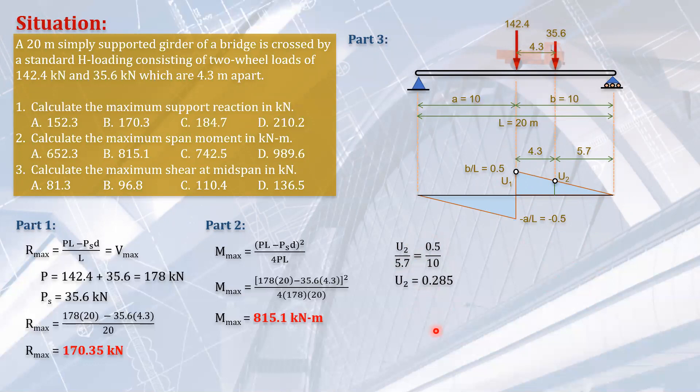So finally, the maximum shear at the mid-span is 142.4 times U1 plus 35.6 times U2. So that's it. Then that will give you the biggest, the greatest shear that can occur at the mid-span during the influence line.